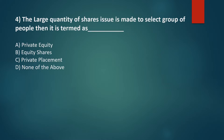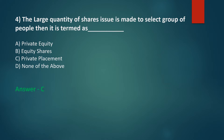When a large quantity of shares is issued to a select group of people, it is termed as — Option A: Private equity, Option B: Equity shares, Option C: Private placement, Option D: None of the above. The correct answer is Option C: Private placement.